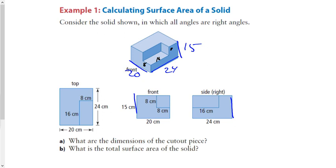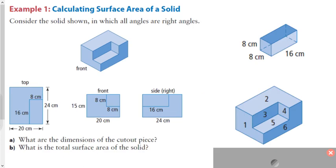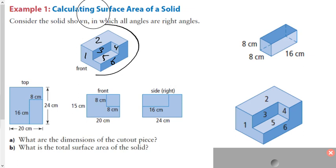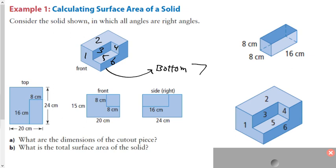To help you out, I want you to write down on your paper — on this picture — the numbers 1, 2, 3 on the visible front faces, then 4, 5, and 6. There are also faces we can't see. For the bottom, call that face 7. The back face we can't see, call that 8. And the other hidden face, call that 9.